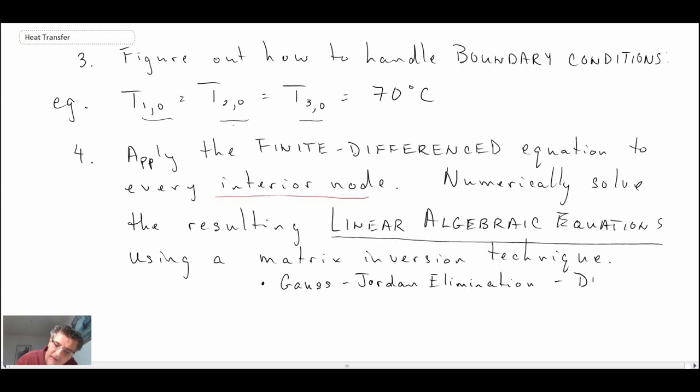One is the Gauss-Jordan elimination technique, and this is a direct method. Another one is the Gauss-Seidel technique, and this one requires iteration.